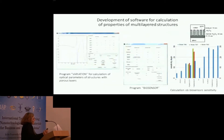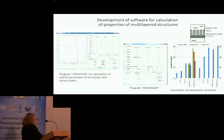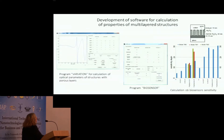An important part of our work is the development of original software for calculation of properties of multilayered structures. The key feature of our software is the capability to handle multilayered structures with a porous layer. There is also an additional program for calculation of the sensitivity of sensors — both refractometric and biosensor types. The model for calculation is shown in the picture in the upper right. Using this program, we have estimated the sensitivity of different kinds of sensors with various materials working in different waveguide modes.